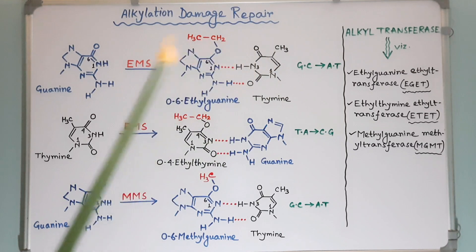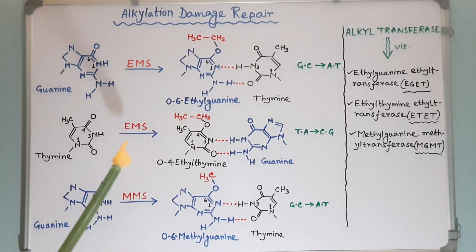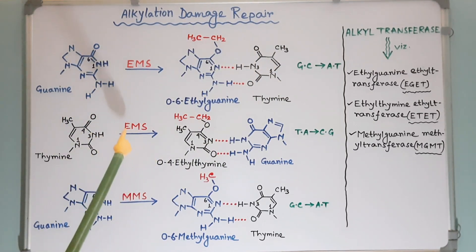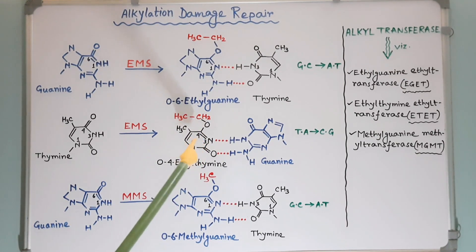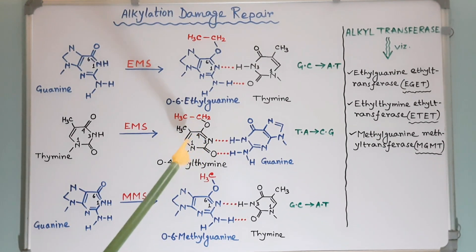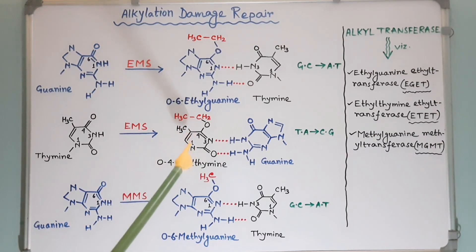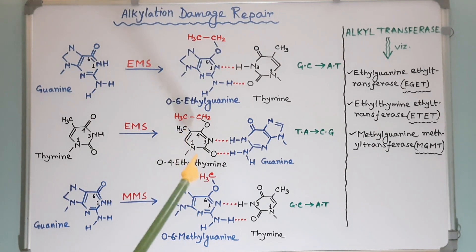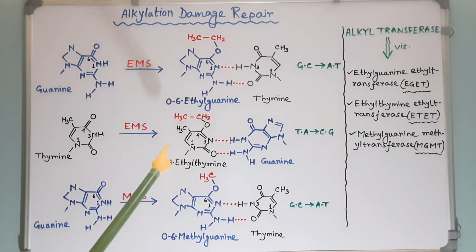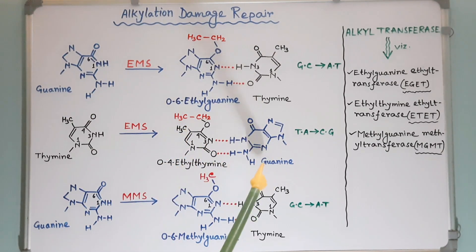In the second diagram, EMS adds an ethyl group to the oxygen at position 4 of thymine to create O4-ethylthymine. This O4-ethylthymine pairs with guanine instead of adenine.